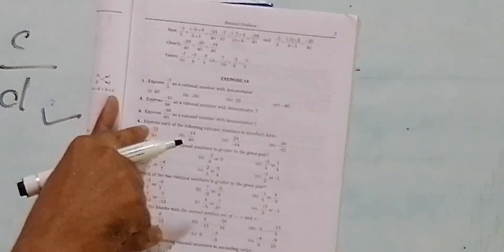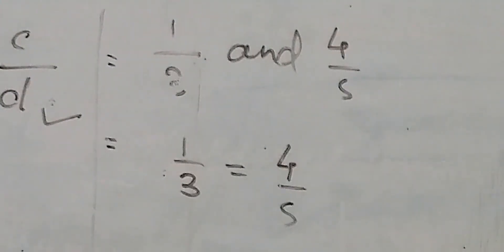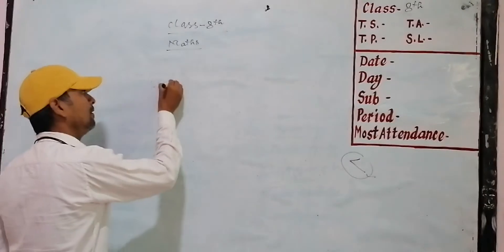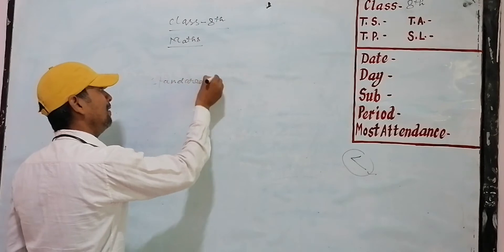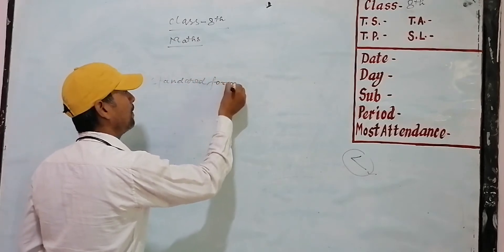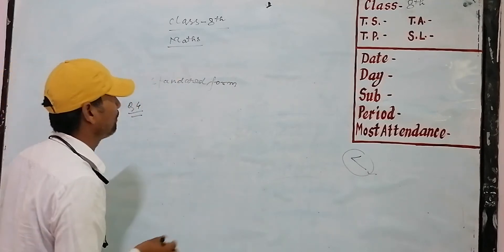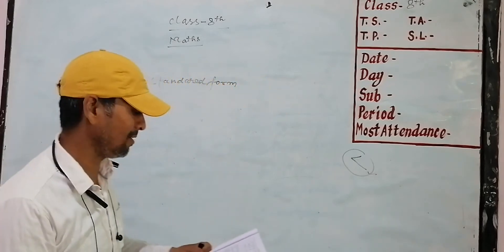I am going to tell you about the practice. The standard form — question number 4 of Exercise 1A: express each of the following rational numbers in standard form.